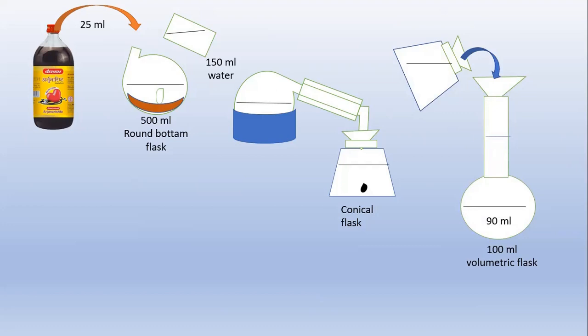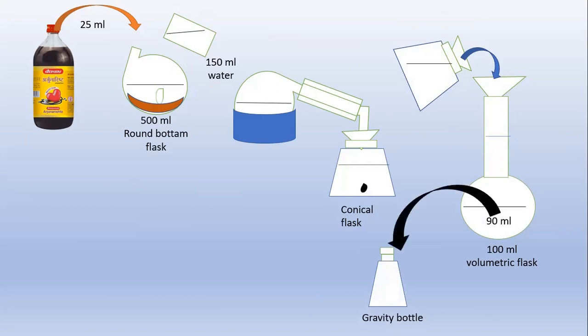The mixture is then mixed thoroughly and transferred into the specific gravity bottle. The specific gravity bottle procedure involves first taking the weight of the empty gravity bottle, then transferring the contents into the gravity bottle and placing the lid.